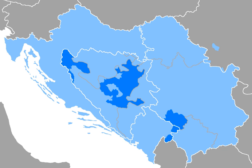It is notable among the varieties of Serbo-Croatian for a number of Arabic, Ottoman-Turkish and Persian loanwords, largely due to the language's interaction with those cultures through Islamic ties.